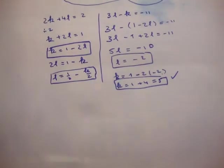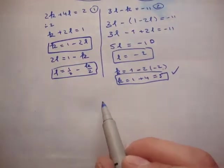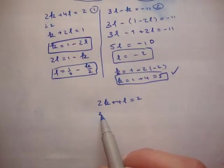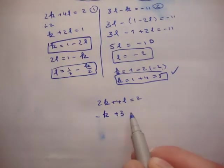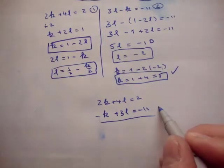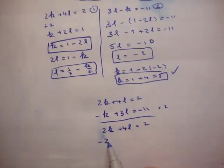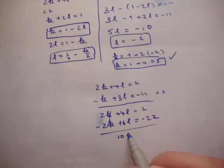Now just to show the simultaneous equation method. So we'll say equation 1 and equation 2. If you want to solve these simultaneously, you'll have something like this. I'll just rearrange it so I have k's and l's on both sides. Now to solve that, I might multiply this one by 2. So you'd have 2k plus 4l is equal to 2, and you'd have minus 2k plus 6l is equal to minus 22.